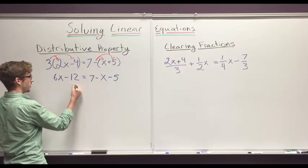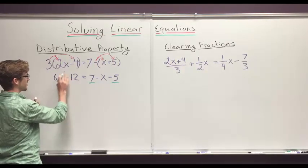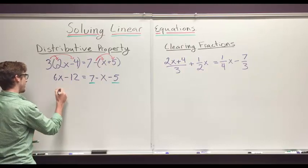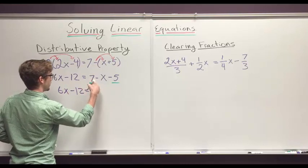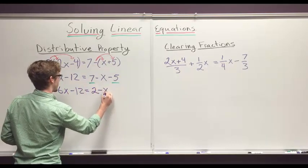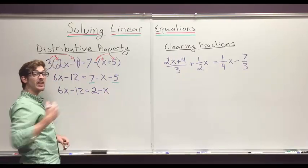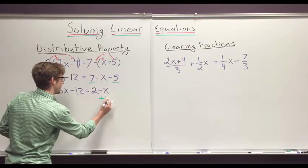Now we can just combine like terms. We all know how to do that. So we got this and this, they're the same on this side. Nothing else is the same over here. So our next step is to write down that we have 6x minus 12 equals 7 minus 5 is 2 minus x. Now we want to get all of the x's on one side and everything else on the other side. So let's add x to both sides.